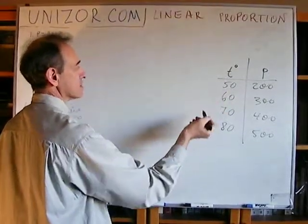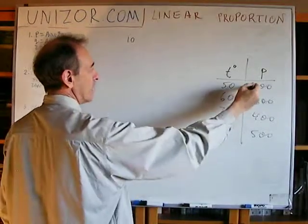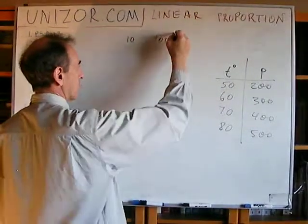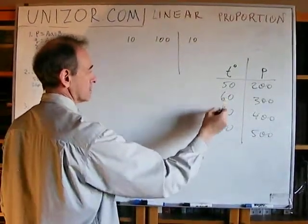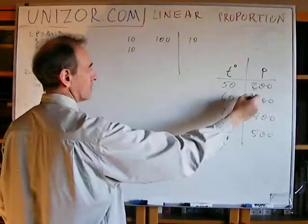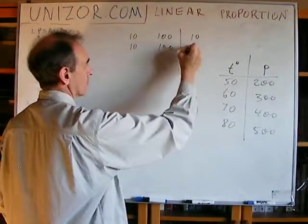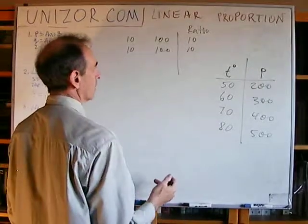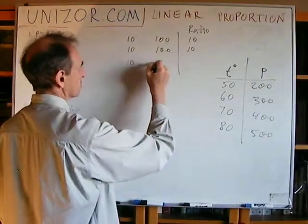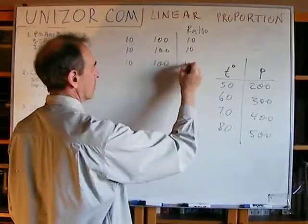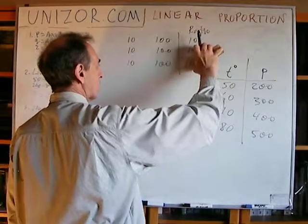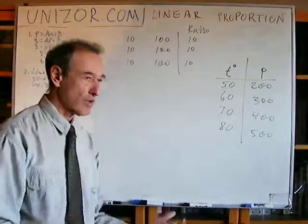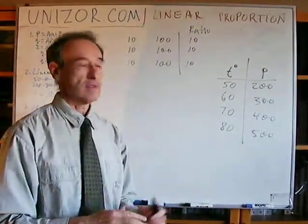Now, the change between 50 and 60 is 10 units and change between 200 and 300 is 100 units. So, the ratio is 10. Now, this change between 60 and 70 is also 10 units. Between 300 and 400 is also 100. So, again, the ratio between the increment of the function relative to the increment of the argument is also 10. So, it looks like there is a proportionality between change of the argument and change of the function. So, there is a strong indication, at least based on these four measurements, that the dependency is linear.